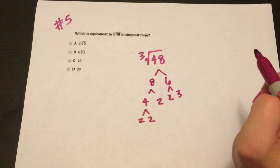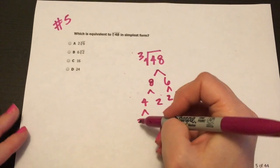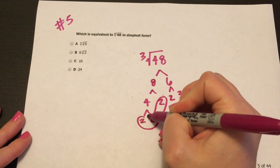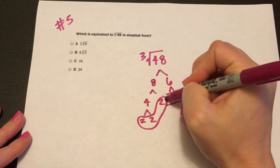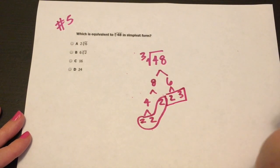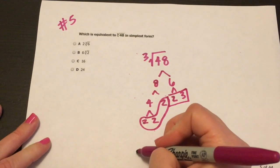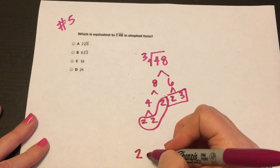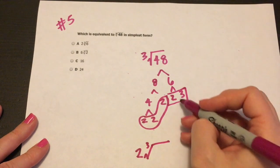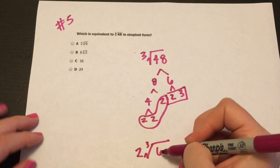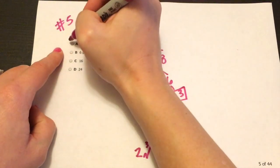One, two, three. And then these two have to stay inside because there's not two more to go with them. So we bring a two out, two, cube root, and then two times three is six. So that's what we're looking for. It should be A. All right.